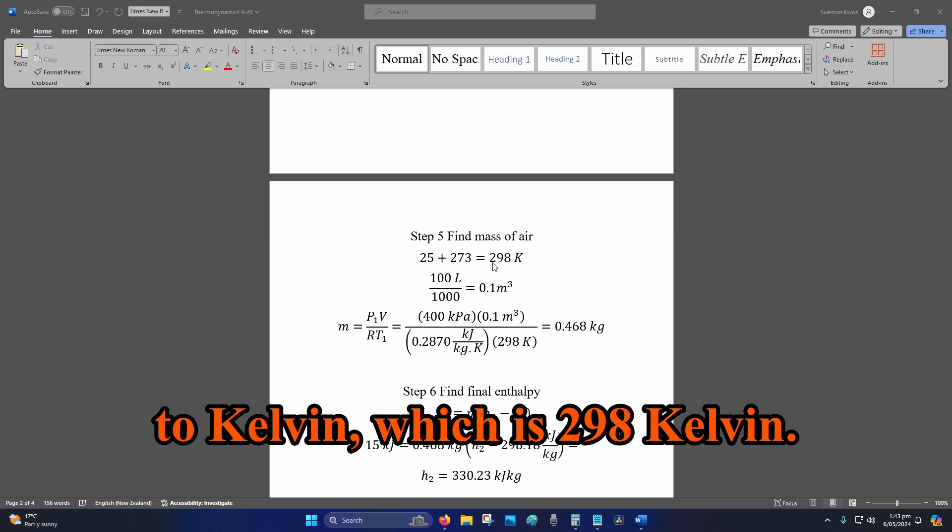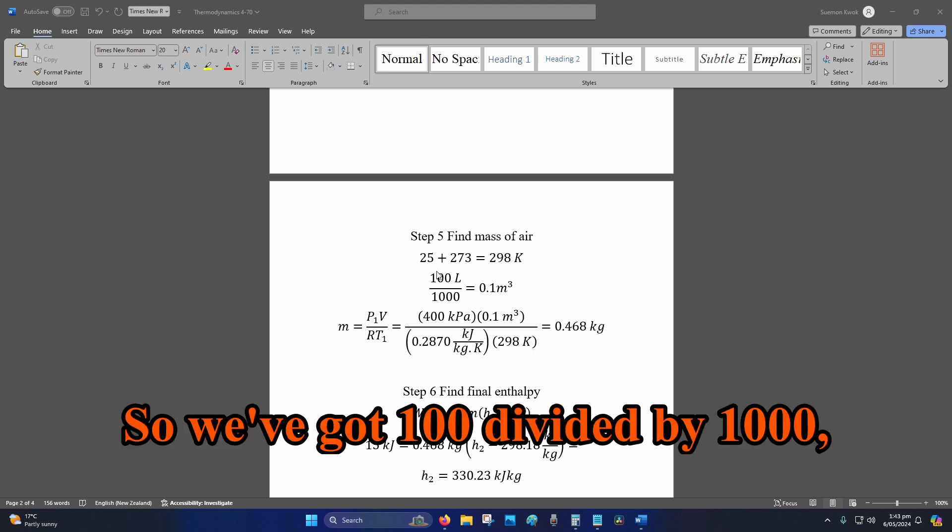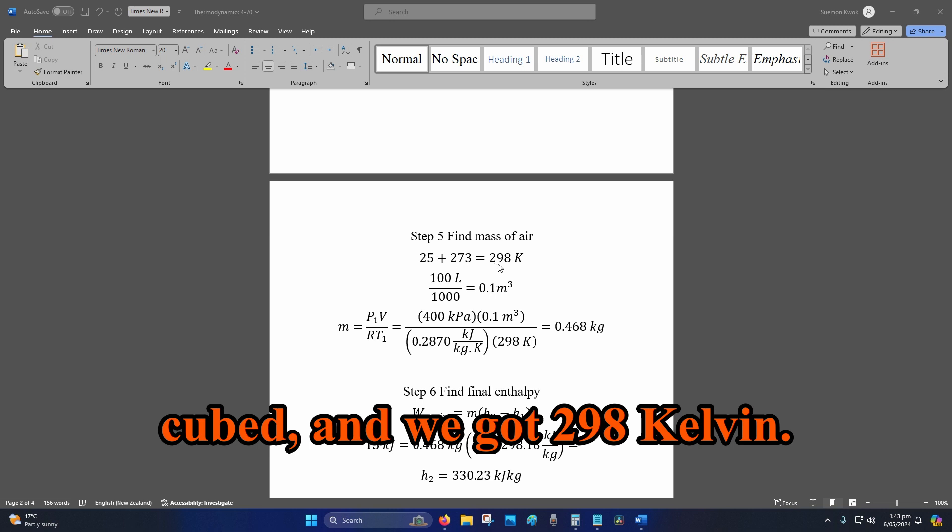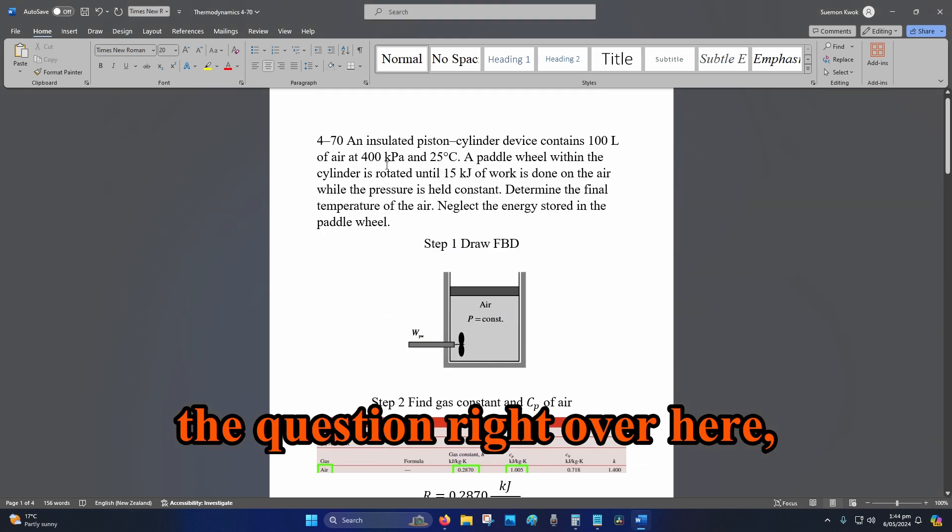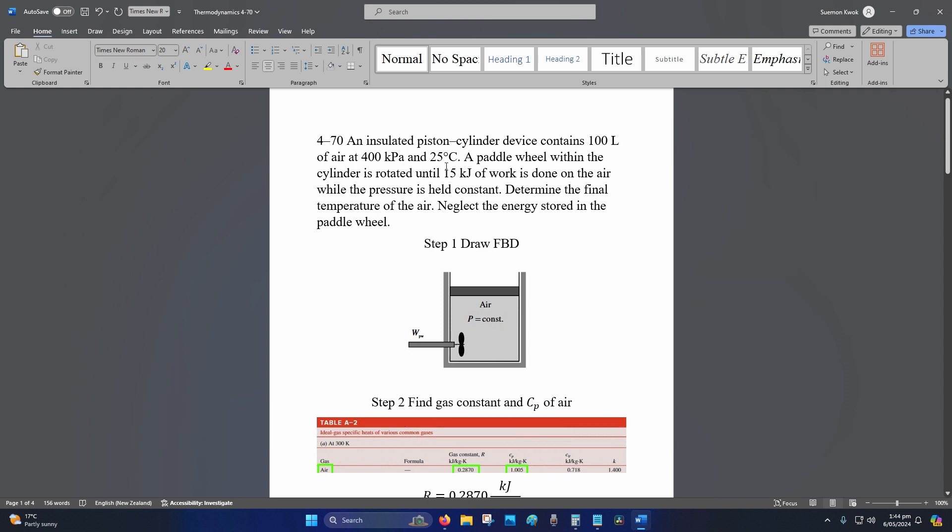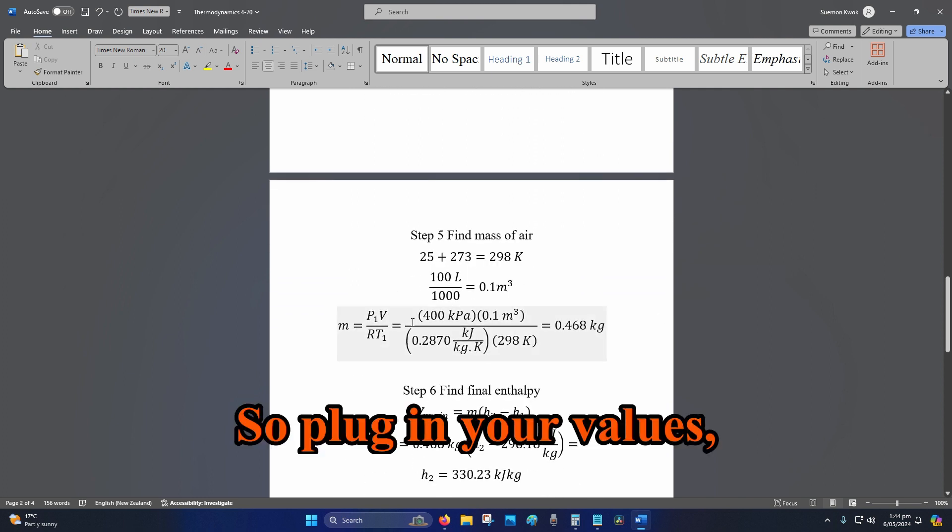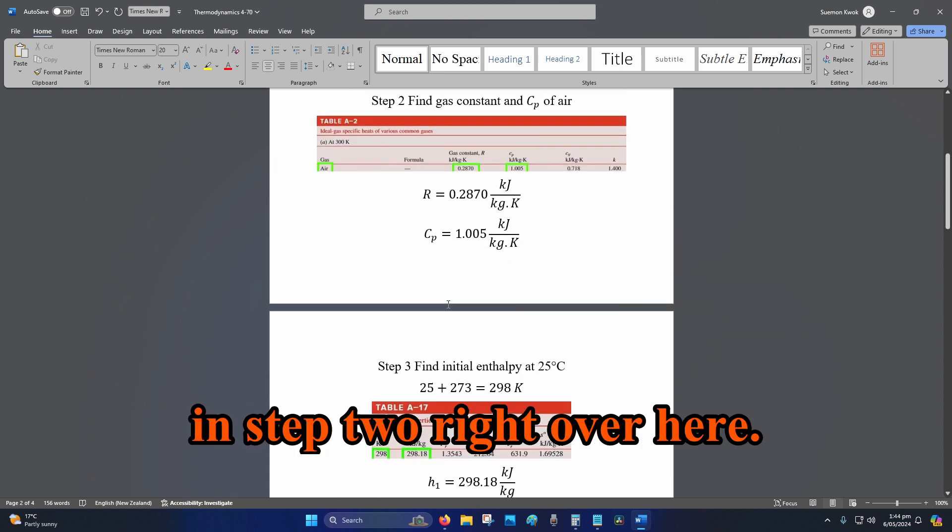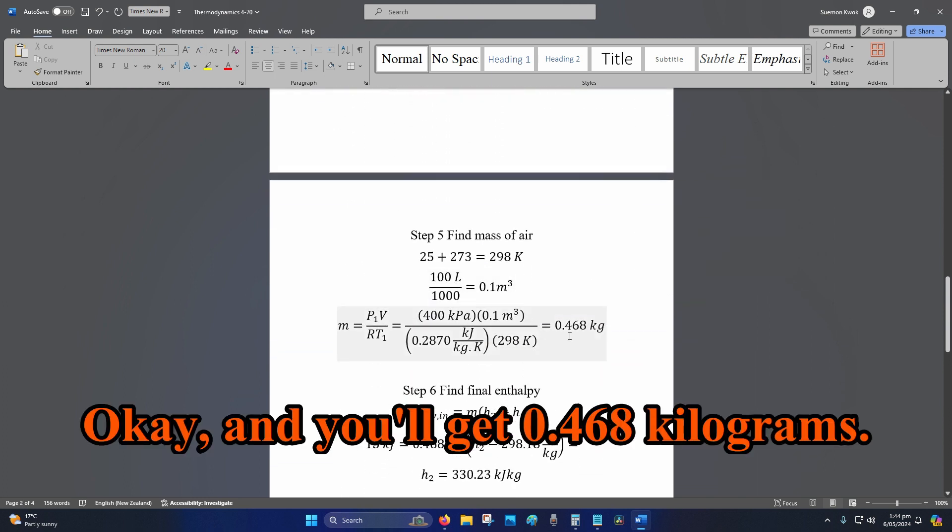We convert the volume from liters to meters cubed, so we've got 100 divided by 1000, that is 0.1 meters cubed. And we got 298 Kelvin. So this 400 kPa is given in the question right over here, and that's our 100 liters converted, same with the 25 degrees Celsius converted. So plug in your values, and your gas constant is what you just found in step two right over here. And you'll get 0.468 kilograms.